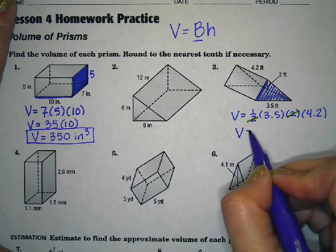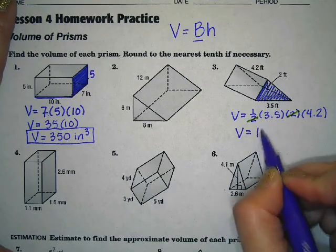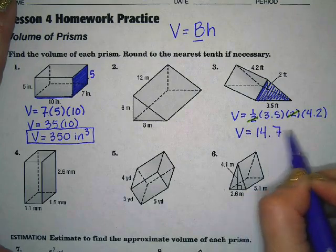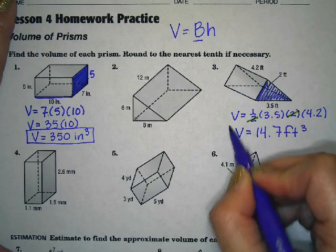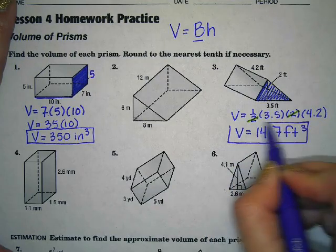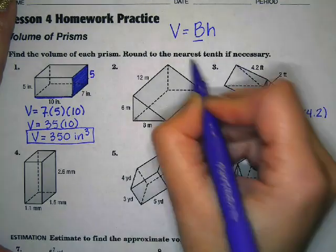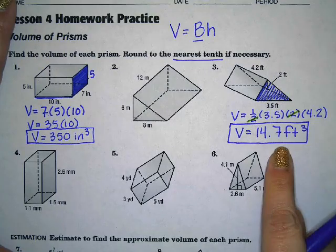So our volume, we put that in our calculator, it gives us 14.7 feet cubed and it is already rounded for us to the nearest tenth, so we do not have to do anything else for that one.